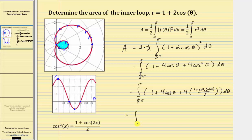Simplifying, we have the integral from two thirds pi radians to pi radians. The four and two simplify, so the integrand function simplifies. We get three plus four cosine theta plus two cosine two theta.